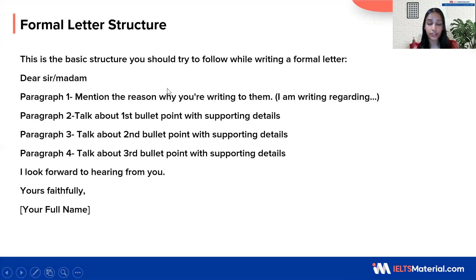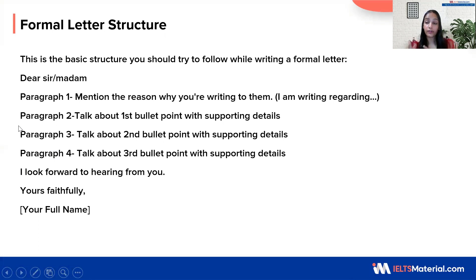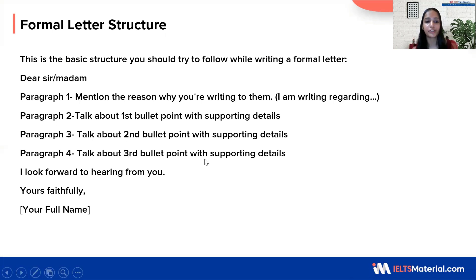Let's see how we can write the structure step by step. You begin with the opening salutation — Dear Sir or Madam for a formal letter — and divide it into four paragraphs. You begin with the purpose of the letter, mentioning the reason why you are writing. Then your subsequent paragraphs will cover each of the bullet points with relevant details, touching upon the second and the third bullet point respectively. There's going to be a closing sentence such as: I look forward to hearing from you. End it with a sign off — Yours Faithfully — and write your name. Do not write XYZ or ABC; it doesn't look good, so you can write any name.